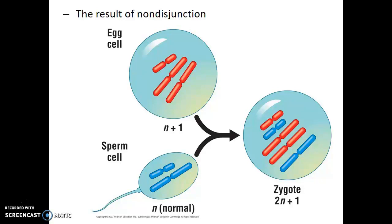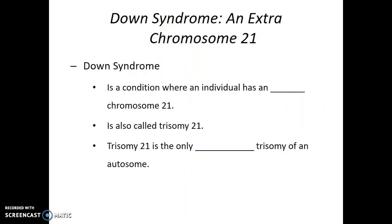The consequence of having extra chromosomes really depends on which chromosome it is. A particular genetic disorder in humans is known as Down syndrome — a condition where an individual has an extra copy of chromosome 21. Down syndrome is also sometimes referred to as trisomy 21. This additional chromosome can result in developmental delays, certain physical features such as poor vision, a protruding tongue, and a thickening of the skin around the back of the neck. It turns out that trisomy 21 is the only non-lethal trisomy of an autosome.